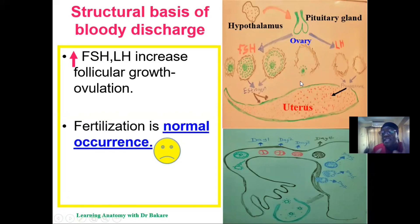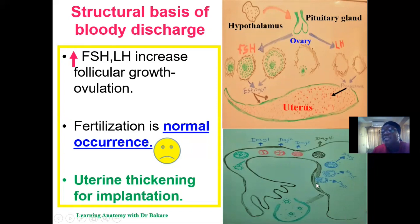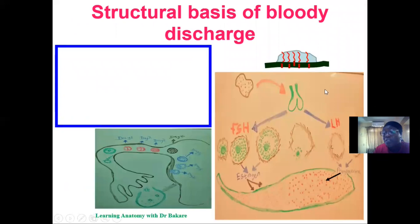The normal scenario after ovulation is for fertilization and then implantation to occur, because the processes have already been laid down for these activities. It is the abnormal scientific alteration — when fertilization does not occur — that leads to the bleeding referred to as menstruation. After the egg travels through the fallopian tube to the ampulla region, the developing zygote would normally move back and get implanted in the uterus, which proliferates to increase in size and thickness to accommodate the blastocyte.